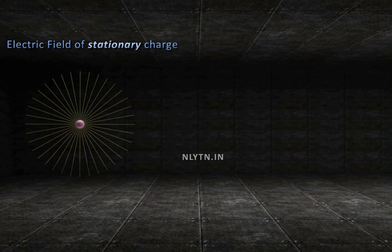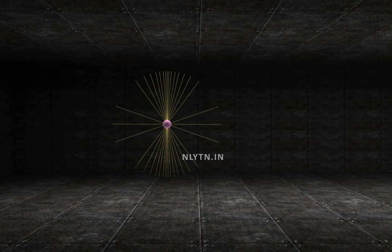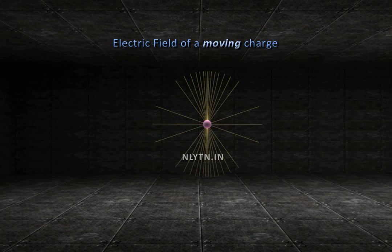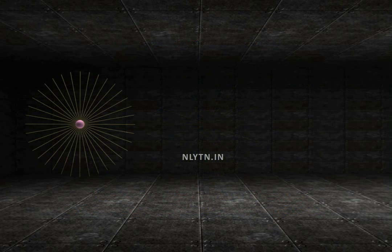When this charge is stationary, its electric field is what we have discussed before. But the moment this charge starts moving, its electric field also changes. The electric field of a moving charge is still radially outwards from it, but now it is stronger in a plane perpendicular to its motion. That is why we refer to the electric field of a stationary charge as its electrostatic field.